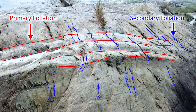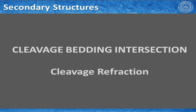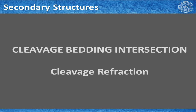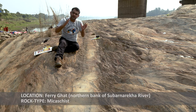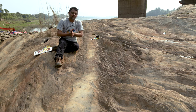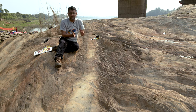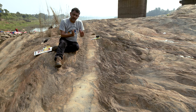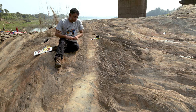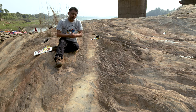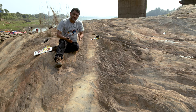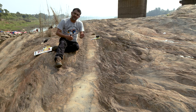You have primary foliations — the red ones — and the blue ones are secondary foliations. So we just learnt to distinguish, at least in this exposure, what is foliation or cleavage, and also how to identify the bedding plane and differentiate them in the field. Now we are going to see a very special case of interaction between foliation and bedding plane — S0 and S1.